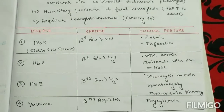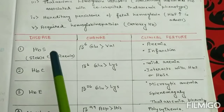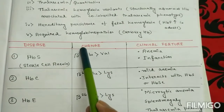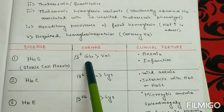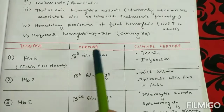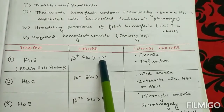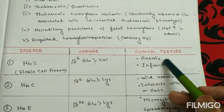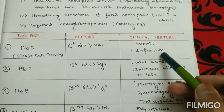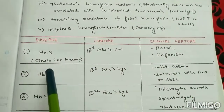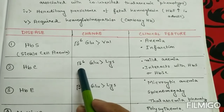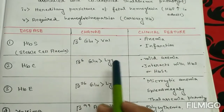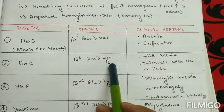Looking at some examples: in sickle cell anemia, in the beta globin sixth position, glutamate is replaced by valine, and the clinical features are anemia and infarction. In HbC disease, similarly, the sixth position glutamate is replaced by lysine.